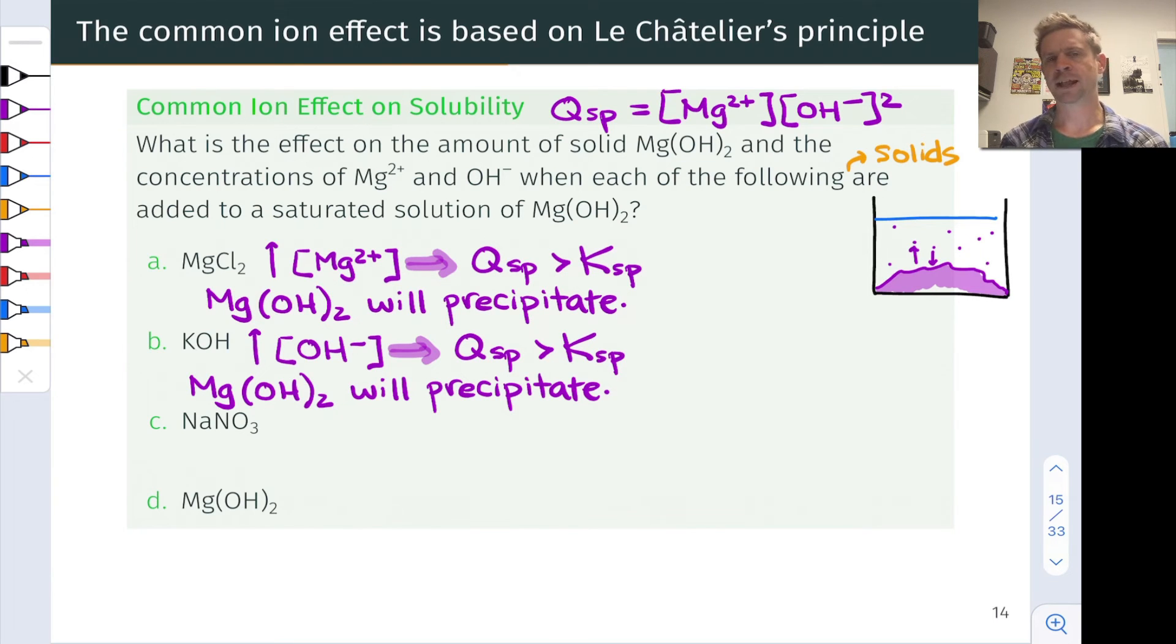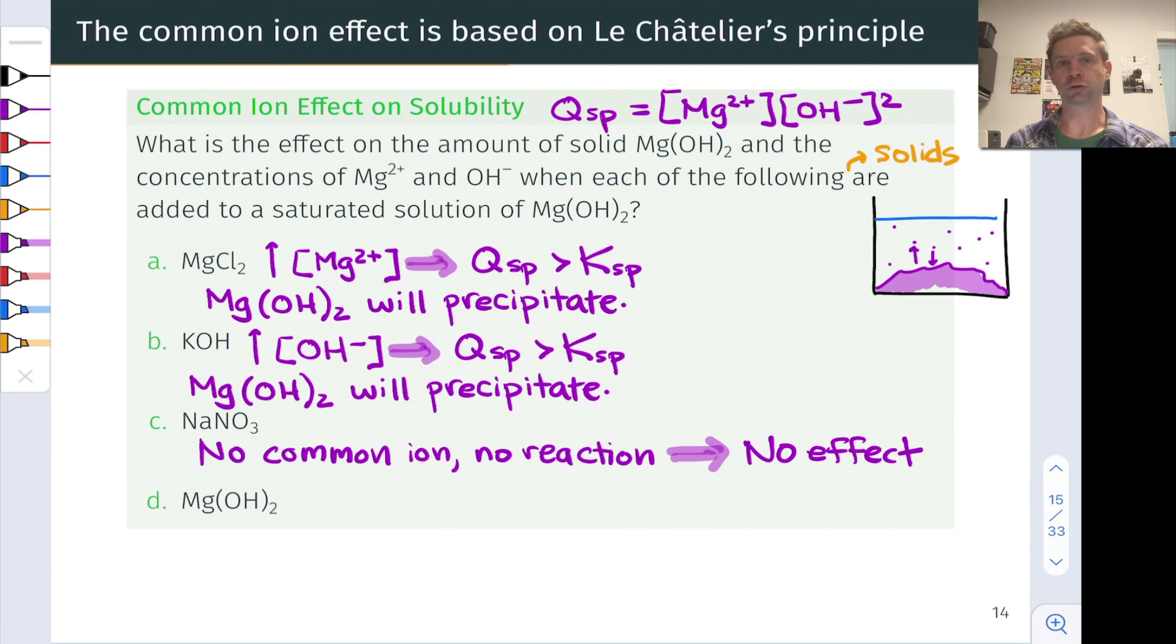How about sodium nitrate, NaNO3? Well, we've got Na+ and NO3- in that salt. Neither of these is in common with magnesium hydroxide, the ions in that substance. And because there's no common ion and neither of these ions reacts with Mg2+ or OH-, there will be no effect on the molar solubility of Mg(OH)2 by this salt.